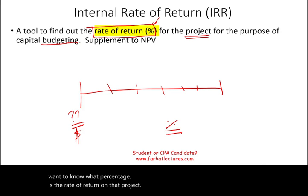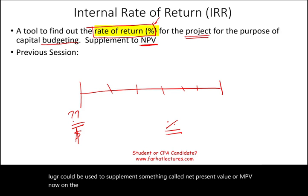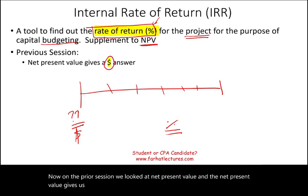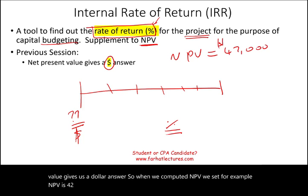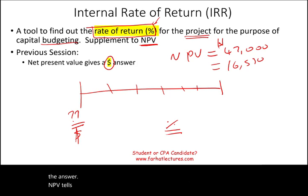IRR could be used to supplement something called net present value, or NPV. On the prior session, we looked at net present value, and the NPV gives us a dollar answer. When we computed NPV, we said, for example, NPV is $42,000, or NPV equals $16,530. NPV tells you whether the project is acceptable or not based on a dollar amount.